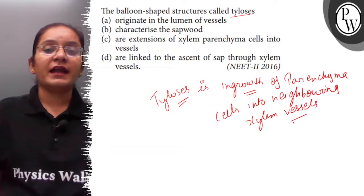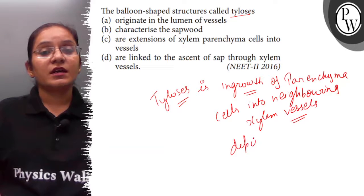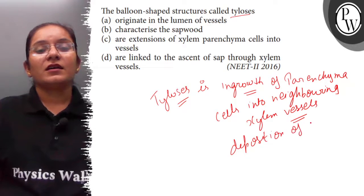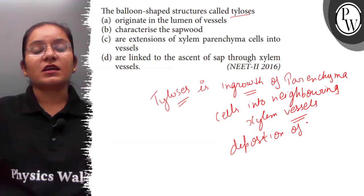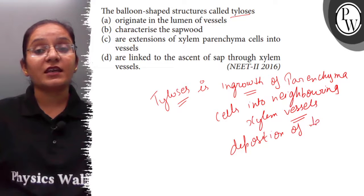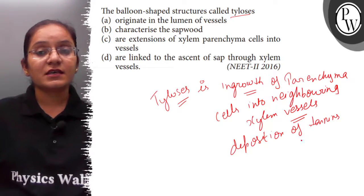Due to depositions, tyloses are balloon-like structures. They deposit pigments such as tannins, resins, and organic compounds. Due to deposition of tannins, resins, etc., they develop specific characteristics.